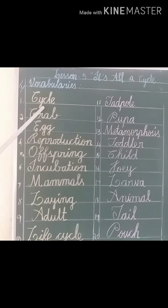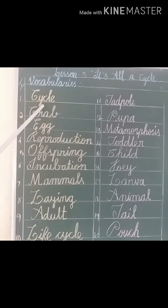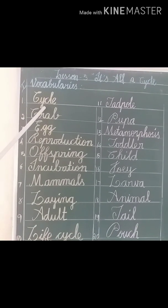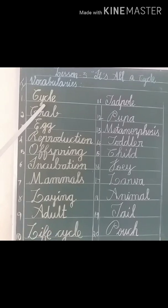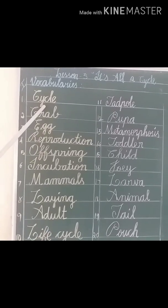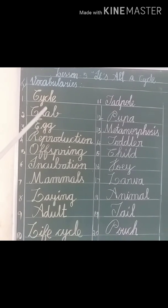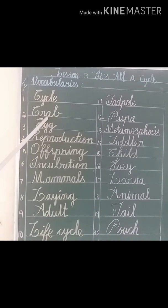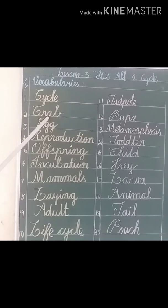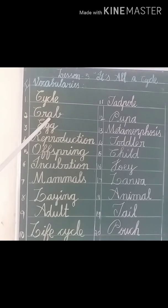Cycle — it means a series of events that are regularly repeated in the same order. Crab — it means a sea animal.